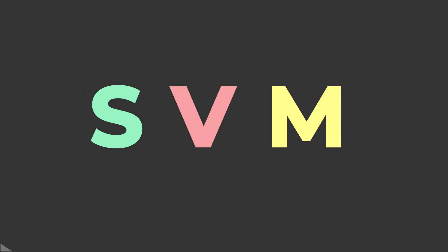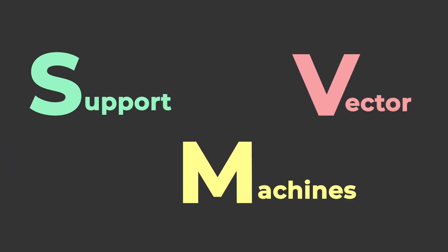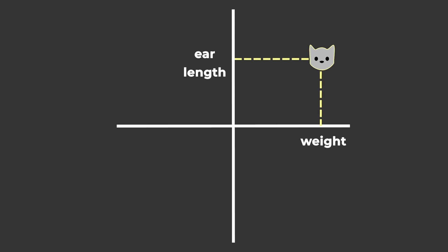SVMs, or support vector machines, are some of the simplest and arguably the most elegant methods for classification. Each object you want to classify is represented as a point in an n-dimensional space, and the coordinates of this point are usually called features.